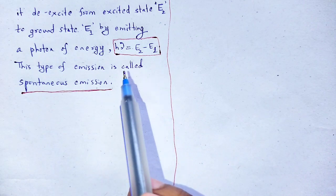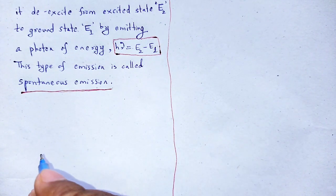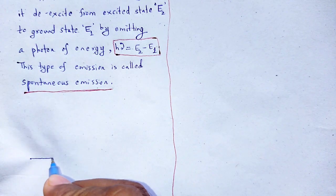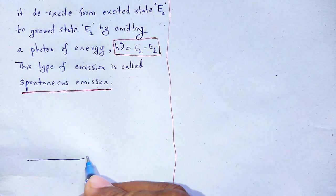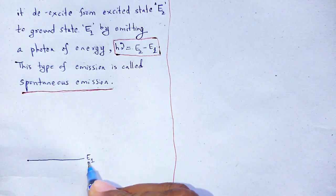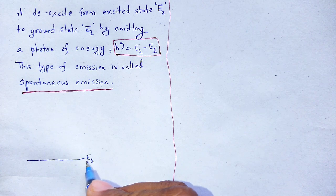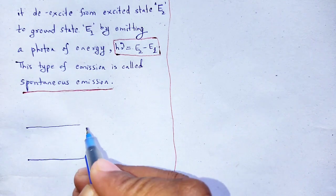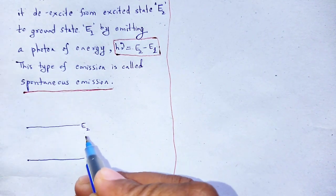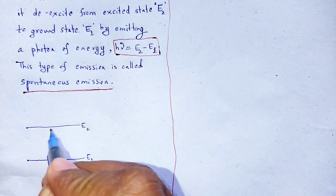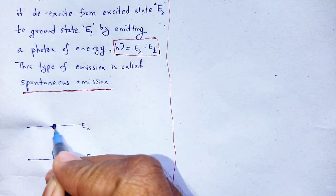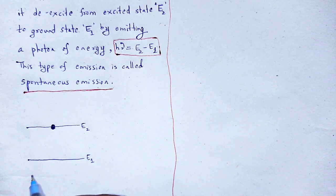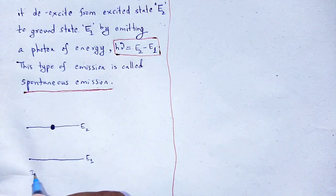Let us understand this by taking a graphical figure. E1 is the ground state, E2 is the excited state, and the atom is present in the excited state. This represents the initial state of the atom.